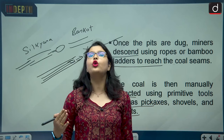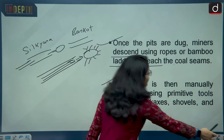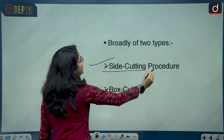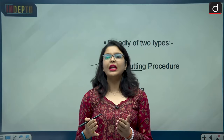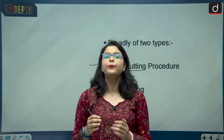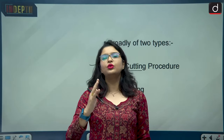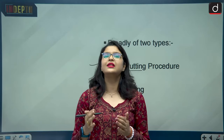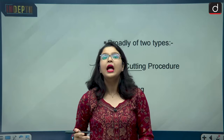Rat hole mining is broadly of two types. The first type is the side cutting procedure, where pits are dug directly into hill slopes. Workers then go into the coal seams through these pits, descend into them, and extract coal.